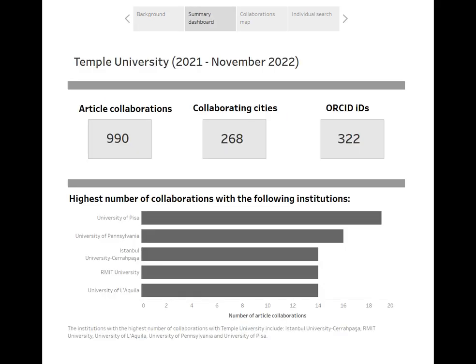The summary dashboard contains high-level stats, including the number of article collaborations, the number of collaborating cities, and the number of ORCID ID holders for the specific time period for the data pulled. There's also a bar chart at the bottom that notes the institutions with which Temple has had the highest number of collaborations based on the data for this time period. The color scheme is very neutral because you're able to customize this to fit your own institution.